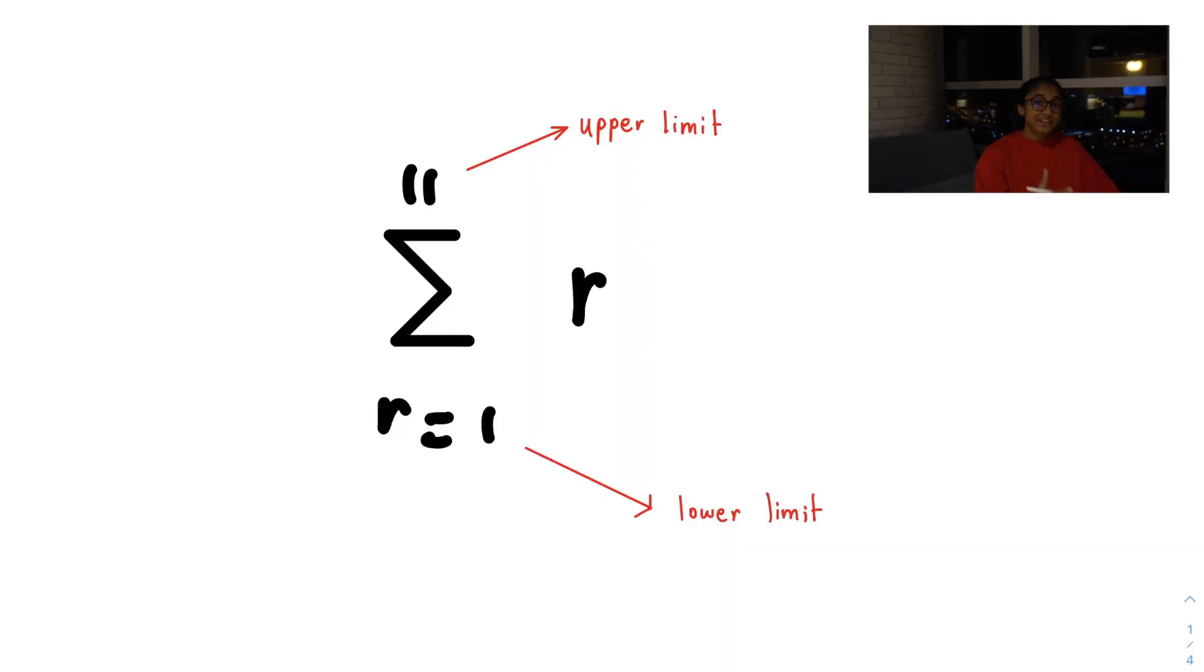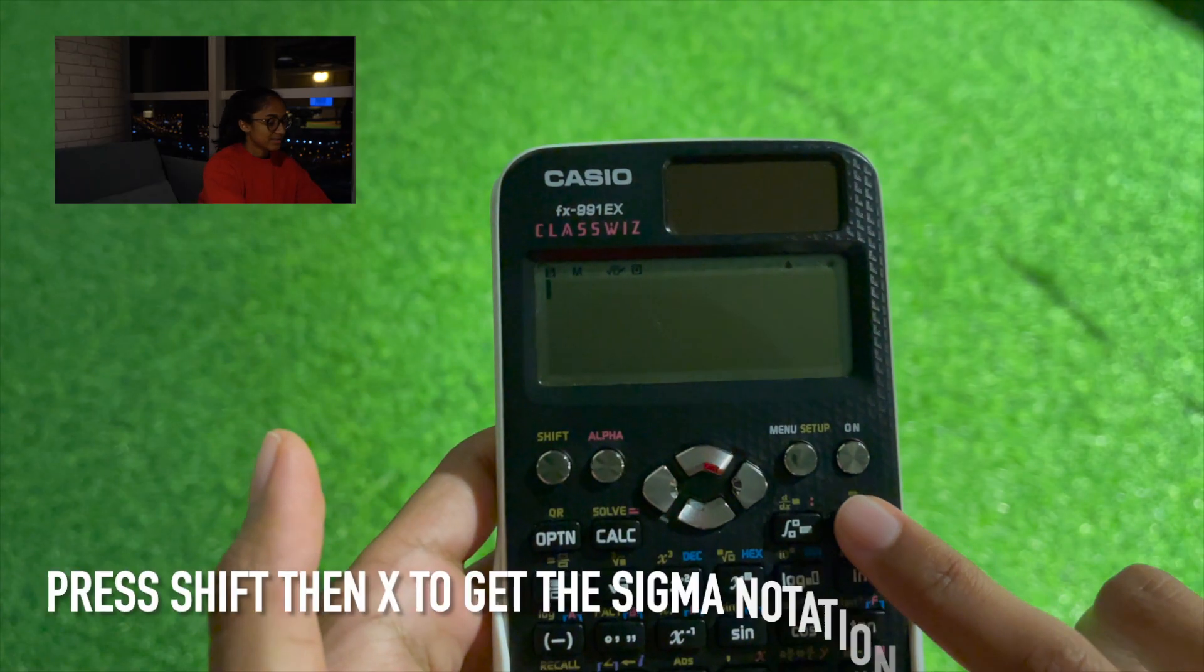Okay, so the first question, if we look at it, we can see that the upper limit is 11 and the lower limit is 1, and the function is R. But for the calculator purposes, we're going to think of R as X, because that's what we see in the calculator, that's what they use. But remember, in your exam, it can be any variable. You just have to know that in the calculator, we're going to use X.